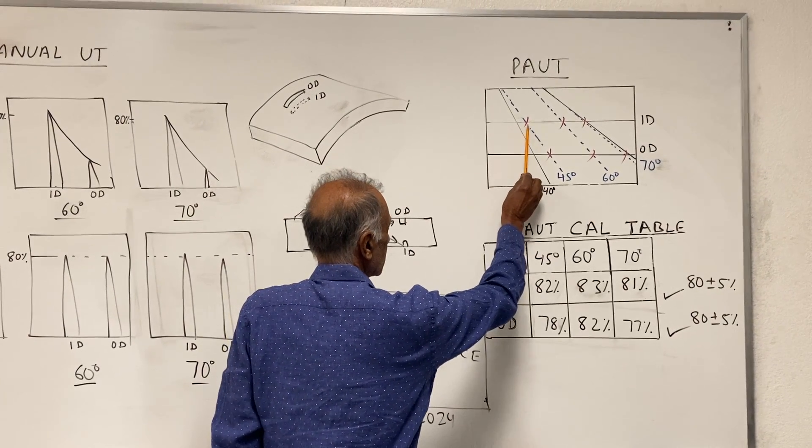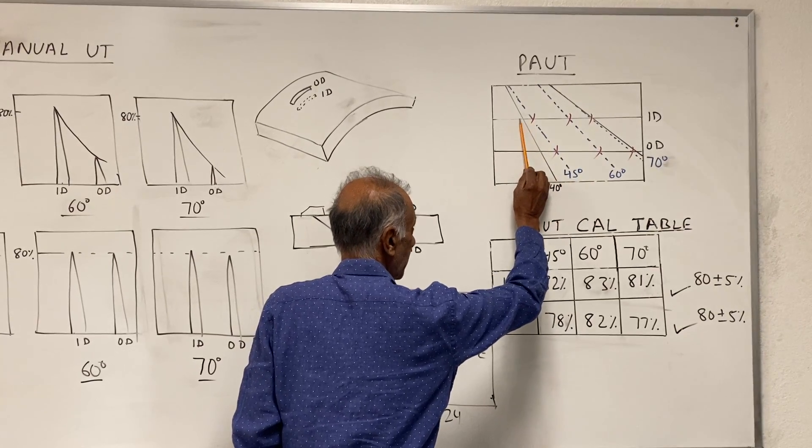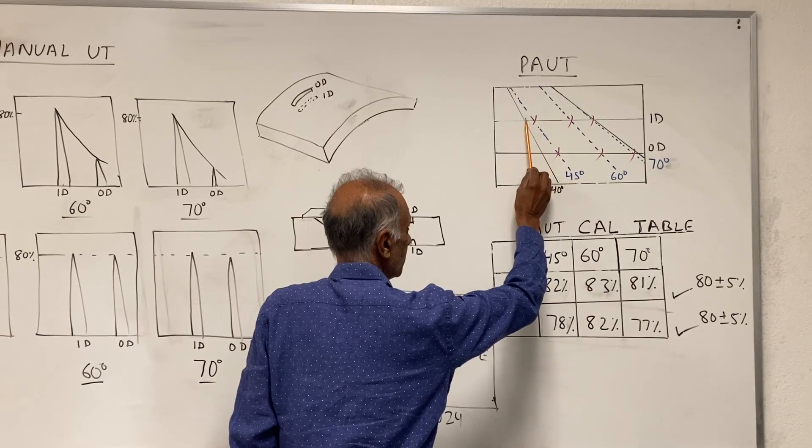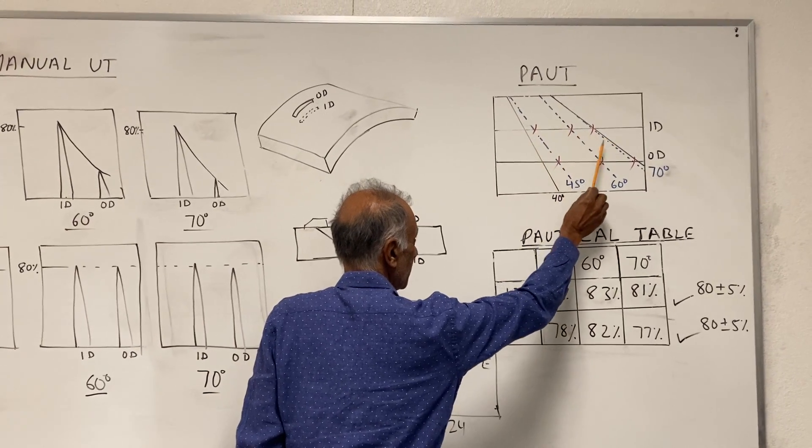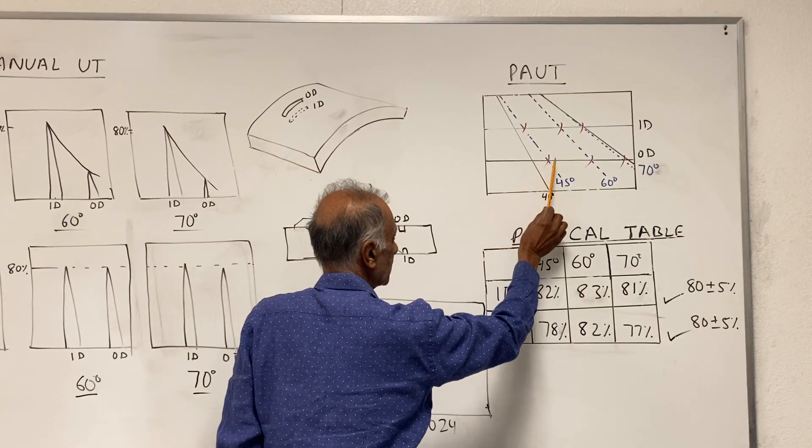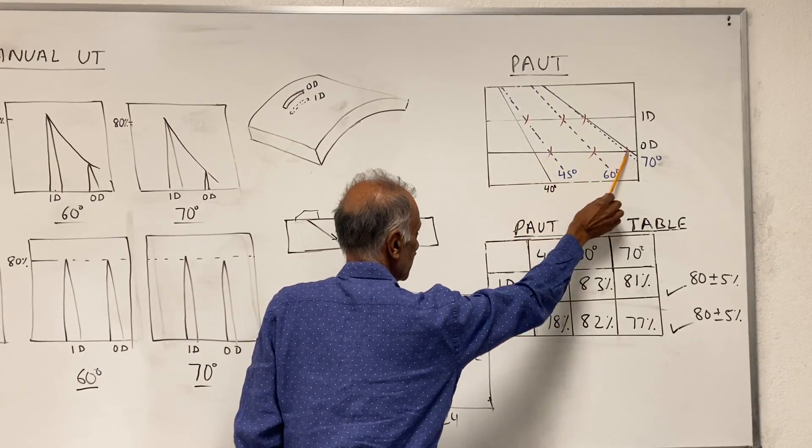ID notches at 3 angles—45, 60, and 70—or basically for all the angles here ranging from 45 to 70, we really need to get all of these to 80%. The same thing for the OD notch: we need to get it to 80% for the 3 angles, 45, 60, and 70.